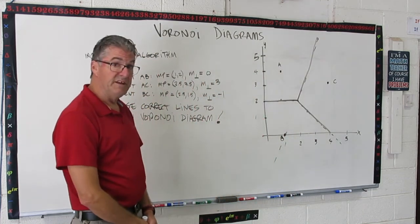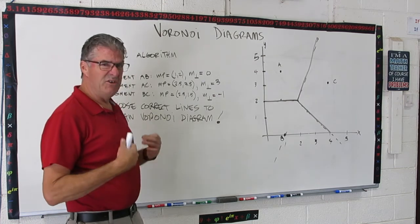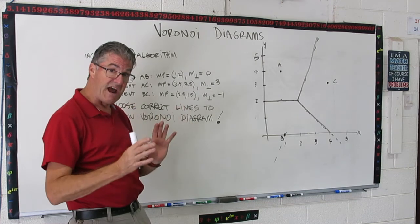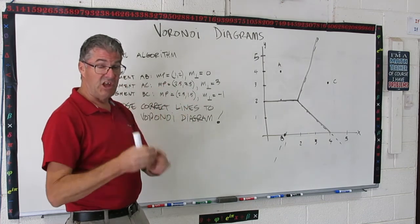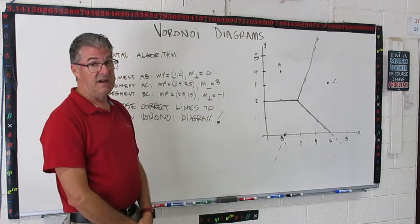Okay. So there's our completed Voronoi diagram. And yeah, three points is not too bad. Wait till you try four or five. It gets kind of complicated. You're going to just have to keep track of all of your lines and your perpendicular bisectors, and then do a good job of erasing and accentuating the lines.